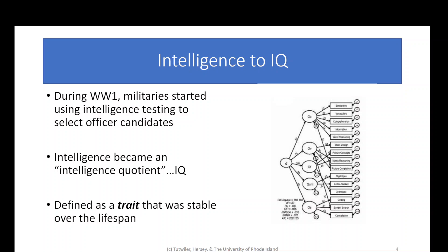During World War I, the military needed some way to decide who was ready to become an officer. You don't generally want someone who isn't super intelligent and able to make decisions rationally to be an officer, because those are the people in charge. So they started calling this trait an intelligence quotient, which you better know as IQ. They defined this as a trait that was stable over the lifespan — your IQ just was what it was when you were born until the day you died. You can see on the side here a diagram of the different sorts of things that went into the military's calculation of IQ.